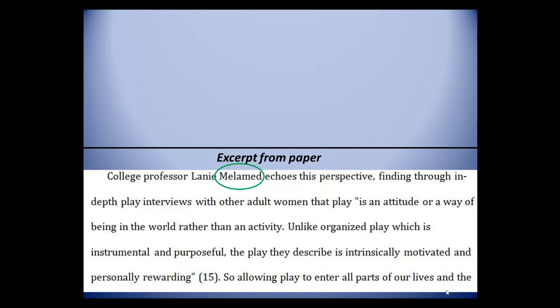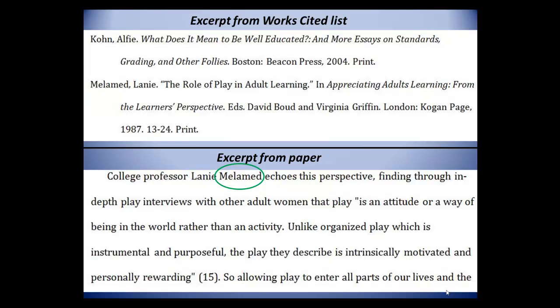Why are these in-text citations needed when you're already including a Works Cited list? Basically, it's done for the sake of clarity and to avoid making someone else's words or ideas appear as if they are your own, which is plagiarism. It works in conjunction with the Works Cited list by using the first word or words of the entry as it's written in the Works Cited list, which is usually the author's last name. It also shows your reader which specific parts of that source informed your own work by giving the page number where they can find the idea or quote you reference. It's a huge help to your reader, and it makes you, the writer, look even more credible.